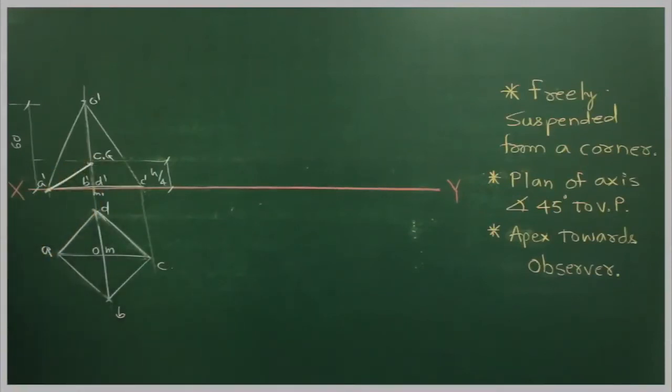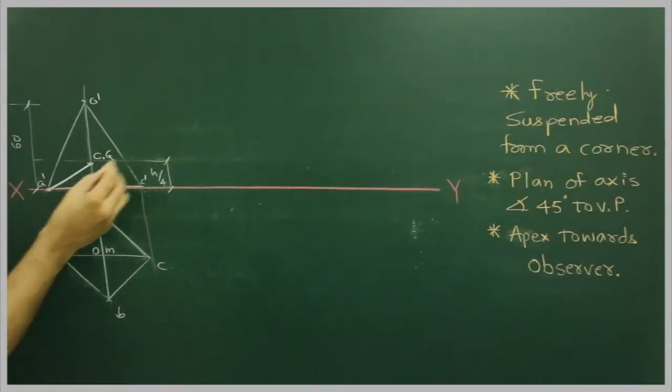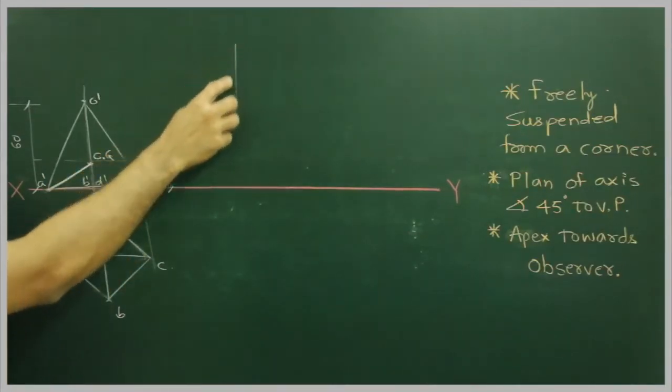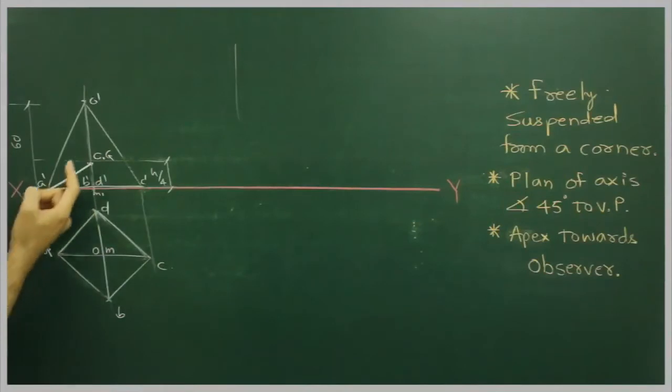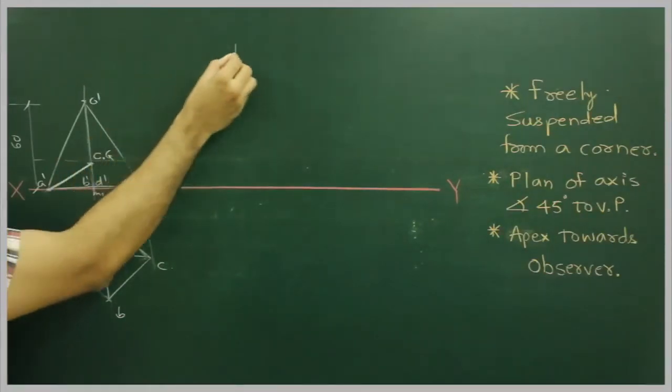It is freely suspended from a corner, so let us assume that this is that corner. And when it is freely suspended, what will happen? The center of gravity will pass through that corner only. So we will take A prime to C prime G and we will cut here.